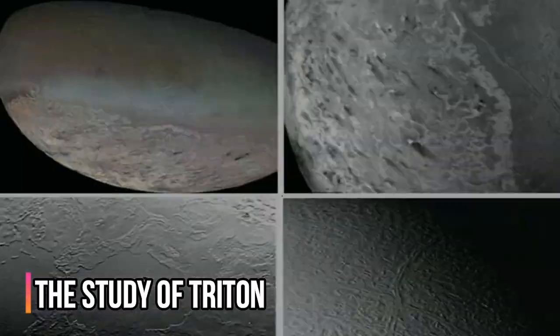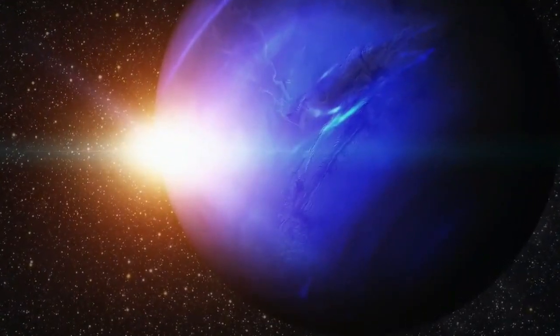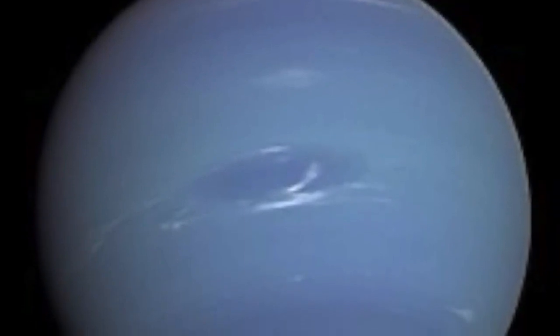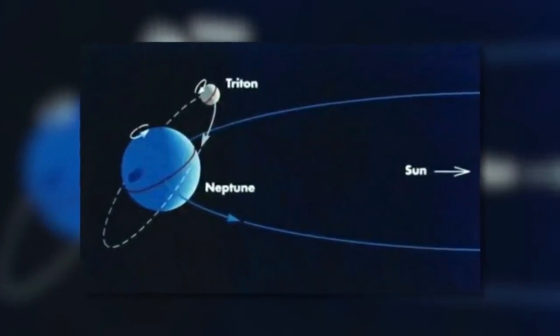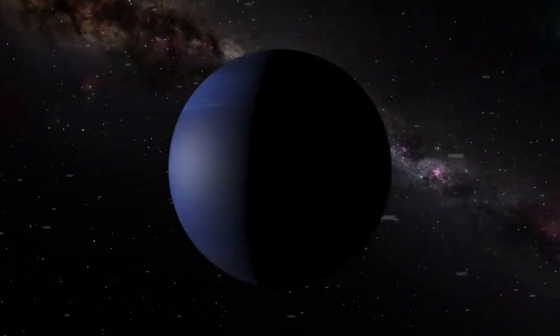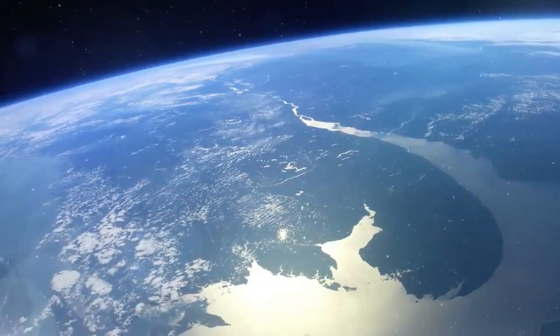The Neptune Explorer mission has Triton, the largest moon of Neptune, as one of its main focuses. The Voyager 2 spacecraft only imaged 40% of its surface, so this mission will provide much higher resolution images of the previously unphotographed sides.